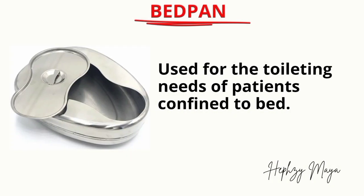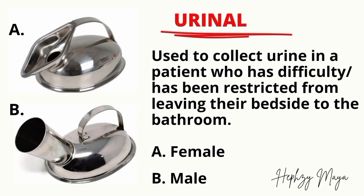Bedpan. It's used for the toileting needs of patients confined to bed. Urinal. It's used to collect urine in a patient who has difficulty or has been restricted from leaving their bedside to the bathroom. A is the female urinal and B is the male urinal. The mouth of the urinal is designed according to the shape of the female and male genitals respectively.